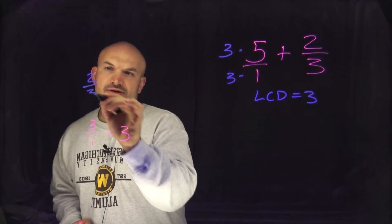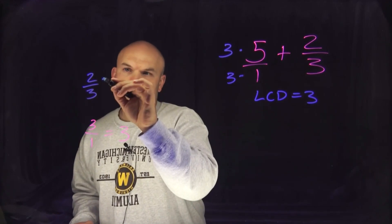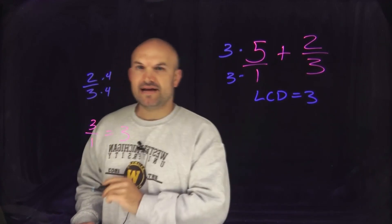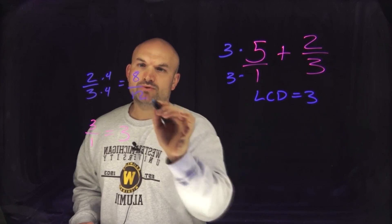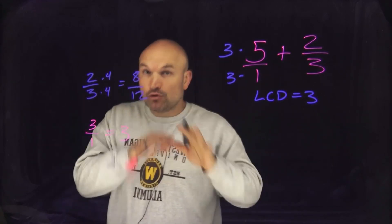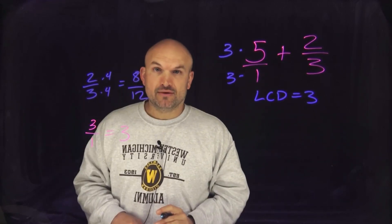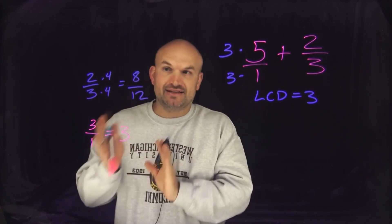If I had 2/3, as long as I multiply by 4 on the top as well as on the bottom, I'm now going to obtain 8 over 12. Well 8 over 12 is equivalent to 2/3. Their measure is going to be exactly the same.